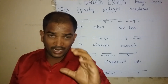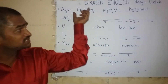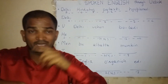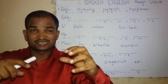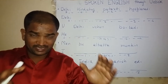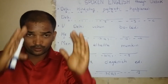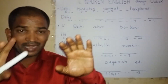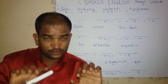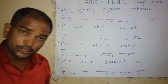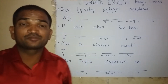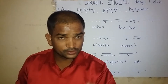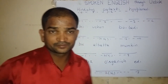Now pause the video. Look at this Uzbek sentence and orally try to speak the sentence in English again and again, about 100 times. While trying orally, at that time with your fingers, try to type the sentence in the comment box. Now pause the video and try yourself. Start.